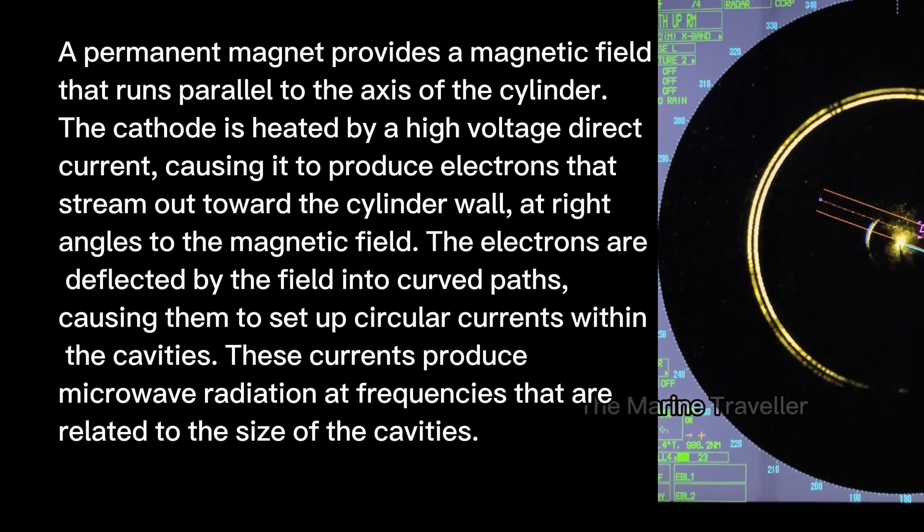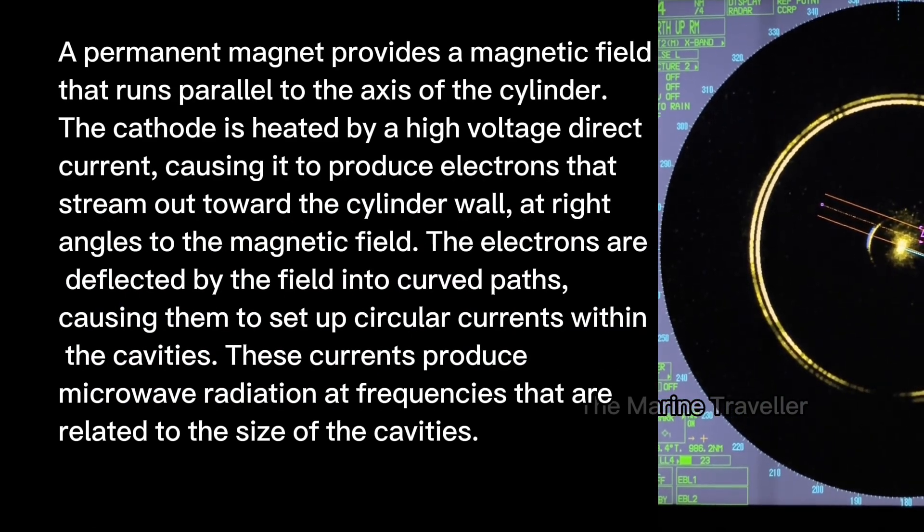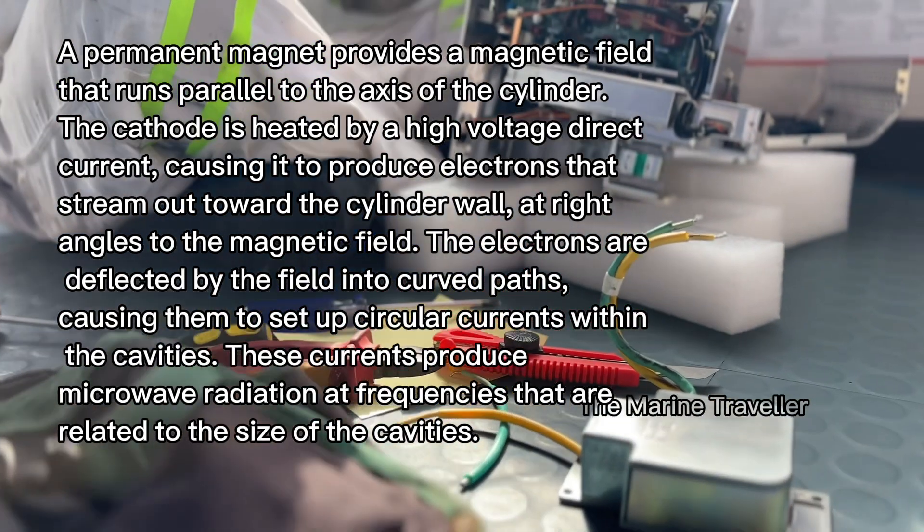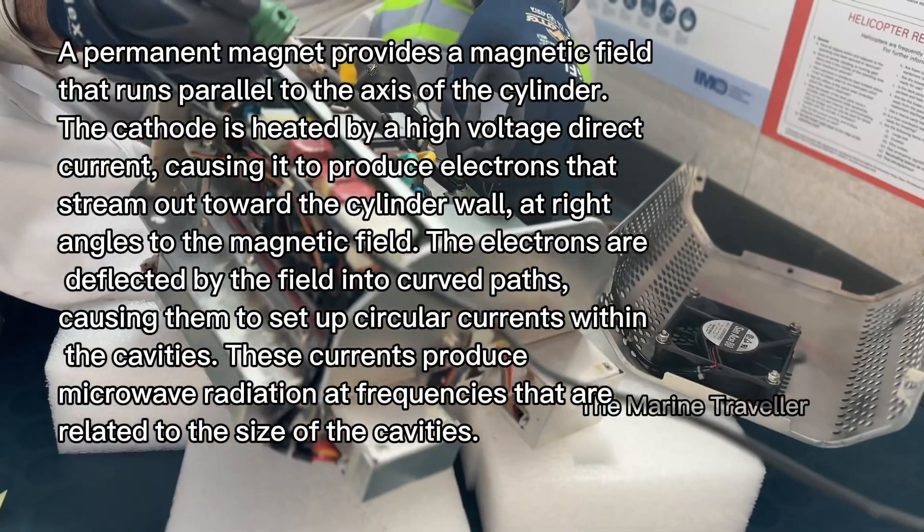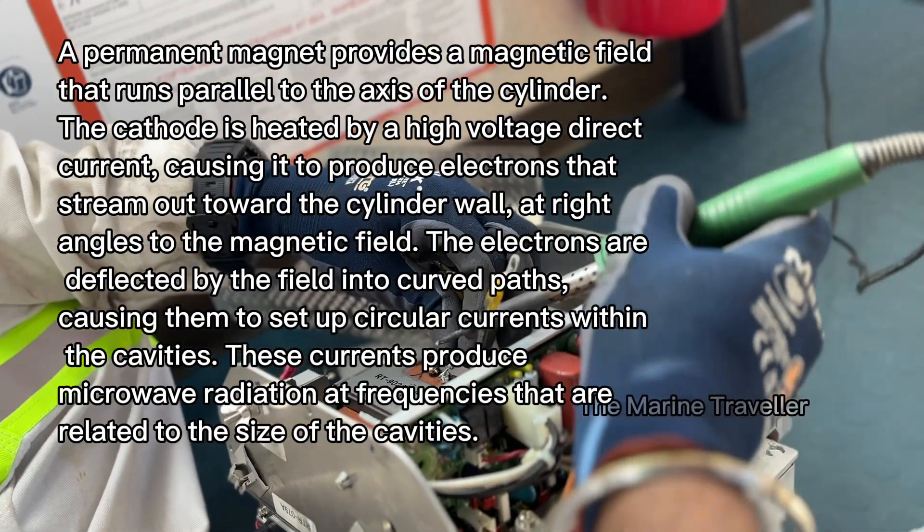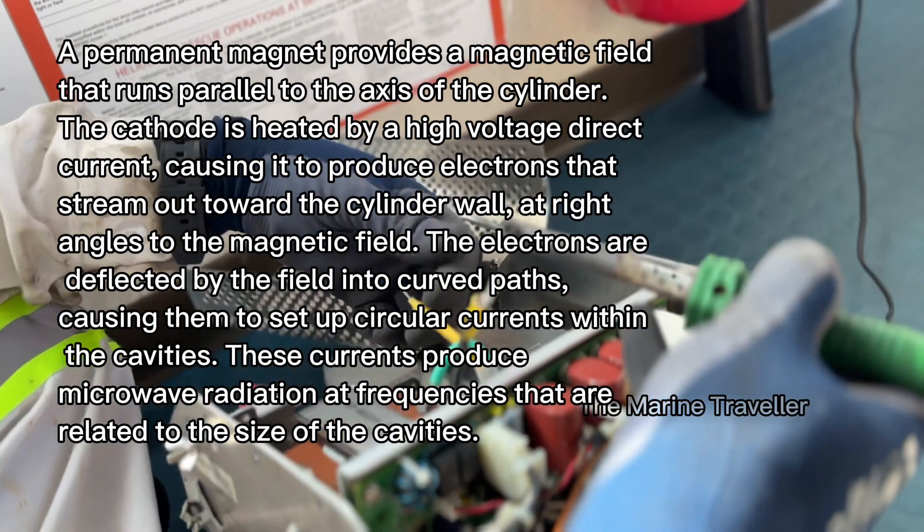A permanent magnet provides a magnetic field that runs parallel to the axis of the cylinder. The cathode is heated by a high-voltage direct current, causing it to produce electrons that stream out toward the cylinder wall at right angles to the magnetic field.